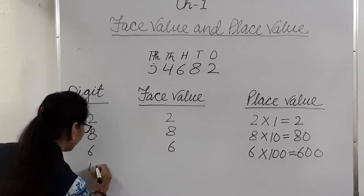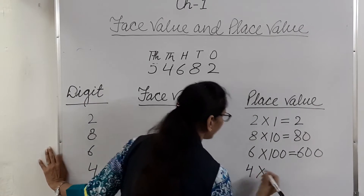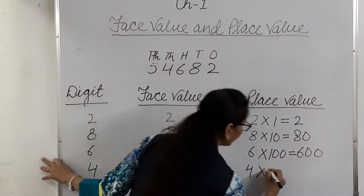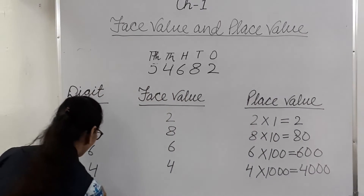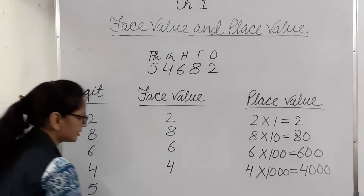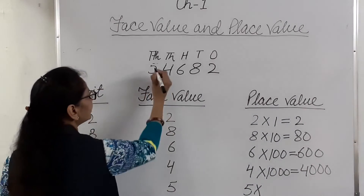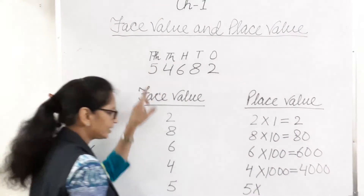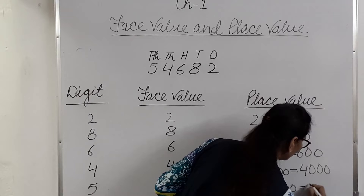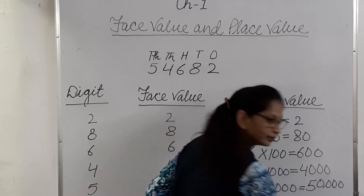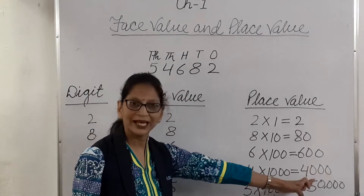Next digit is 4 and face value of 4 is 4. And place value of 4 is 4 multiplied by its place — 4 is in the thousands place. So 4 multiplied by 1000 equals 4000. And last digit is 5. Face value of 5 is 5. And place value of 5 is 5 multiplied by the place where it is put. 5 is in the ten thousands place. So 5 multiplied by 10,000 equals 50,000.